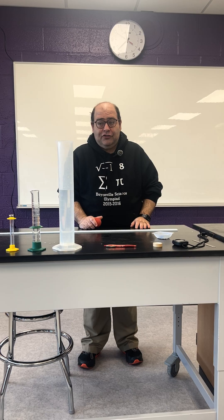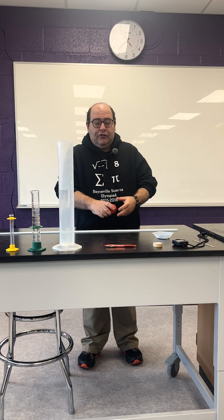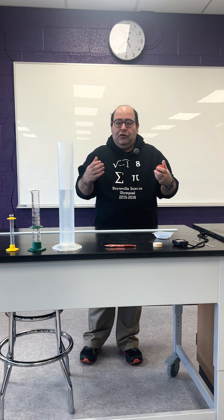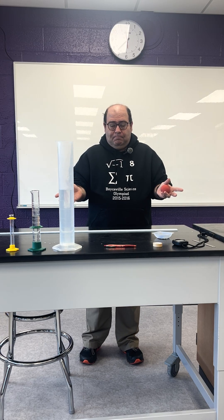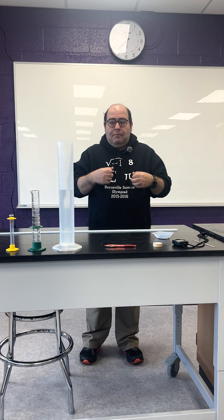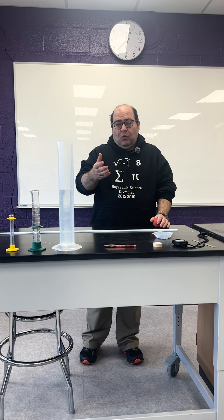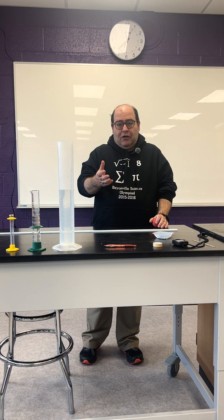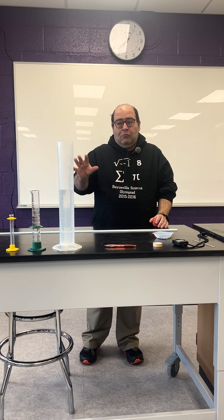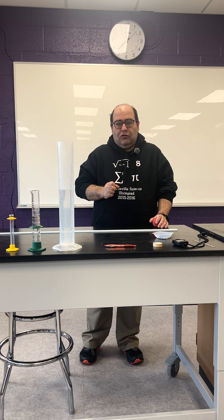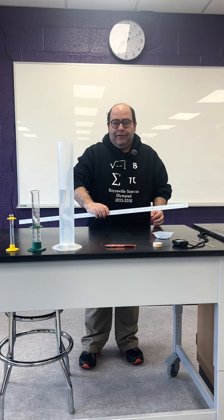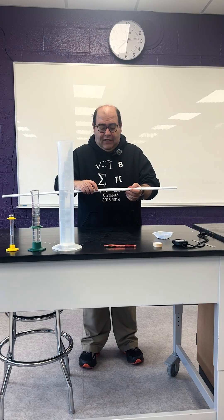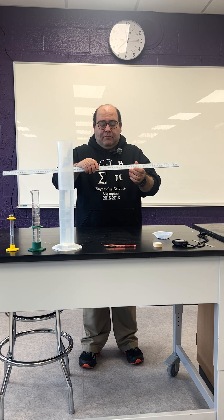For the measurement part, students would be given a tool with the same objects used during the estimation part. Part A is the estimation part — all stations will be set up. Part B is the metric conversions, and while kids are working on that, the event supervisor can go around the room and add the measuring tools.